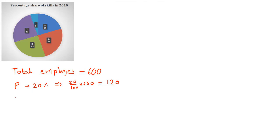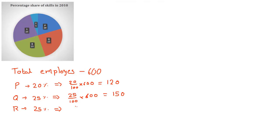Similarly, at skill level Q, 25% of total employees were employed, giving 150 employees. At skill level R also, 25% of total employees were employed, and therefore 150 employees were employed at skill level R in 2010. At skill level S, 25% of total employees were employed, so by counting we find that 150 employees were employed at skill level S in 2010.